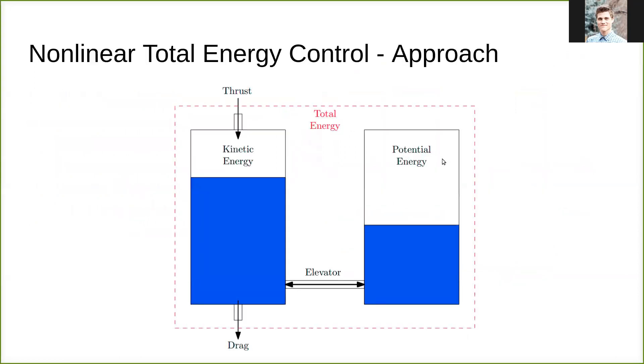The general approach behind nonlinear total energy control is the management and transition between kinetic and potential energies. You have your kinetic energy which is stored as a result of your airspeed velocity, you have potential energy stored as a result of your altitude, and you're able to transition between those energy stores using your elevator or your pitch angle, and you're able to add energy to your system as a whole using your thrust command, and take away energy from your system using the drag of your system.